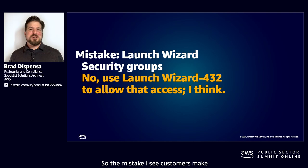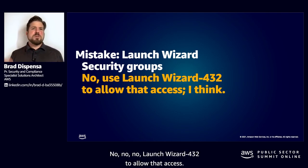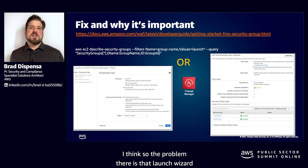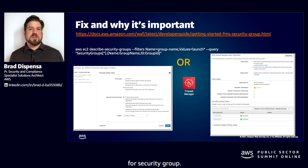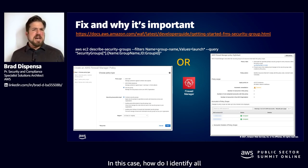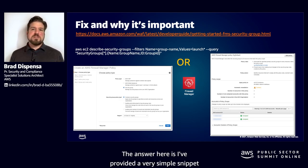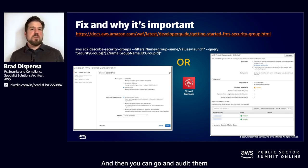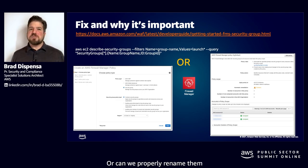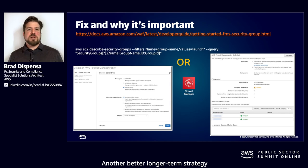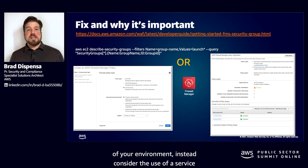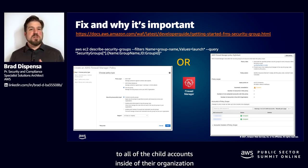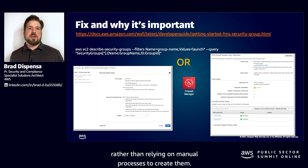Next is Amazon VPC. The mistake I see is customers having a whole bunch of launch wizard security groups — use launch wizard 432 to allow that access, I think. Launch wizard is not a very descriptive or helpful name for a security group. Make sure you're naming your security groups logically so you know their purpose at a glance. I've provided a simple command line snippet that will list all launch wizard security groups in your environment so you can audit and rename them. A better long-term strategy is to use a service like AWS Firewall Manager, which allows customers using AWS Organizations to centrally deploy security groups to all child accounts rather than relying on manual processes.